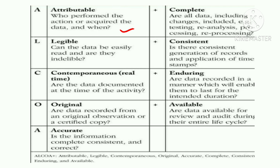Original means our data should be recorded from an original source, like a calibrated thermometer or calibrated hygrometer, and it should be recorded on a controlled copy — a certified copy controlled by the QA department. Accurate means our data should be accurate and complete — there should be no wrong data recorded in the document.